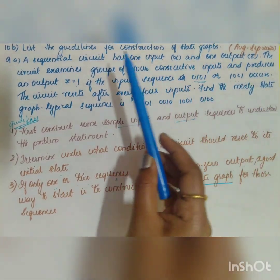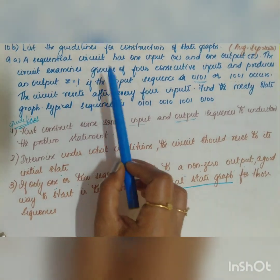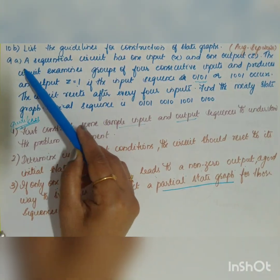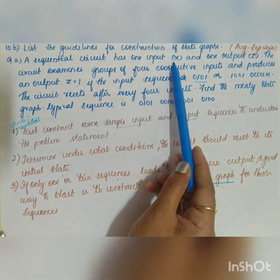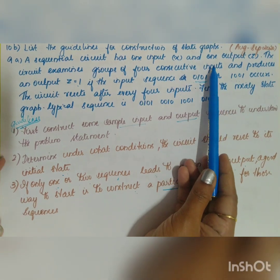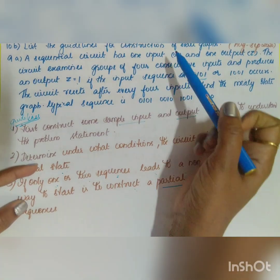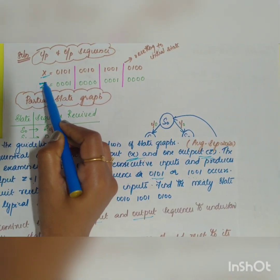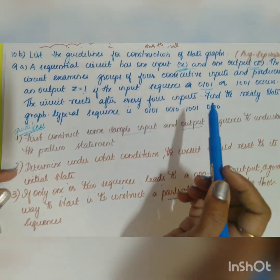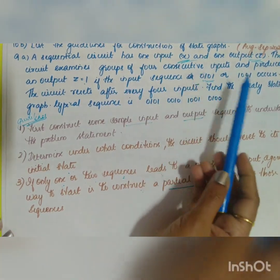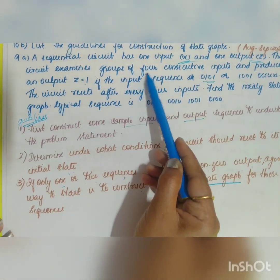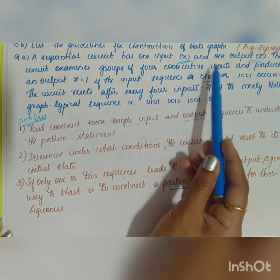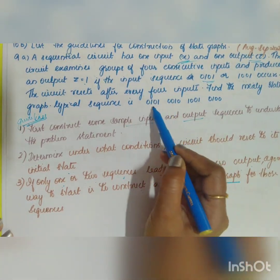Now let us move on to the second question, which is an example of the first question. A sequential circuit has one input x and one output z. The circuit examines groups of four consecutive inputs — these are the four consecutive inputs — so inputs and outputs are given accordingly.